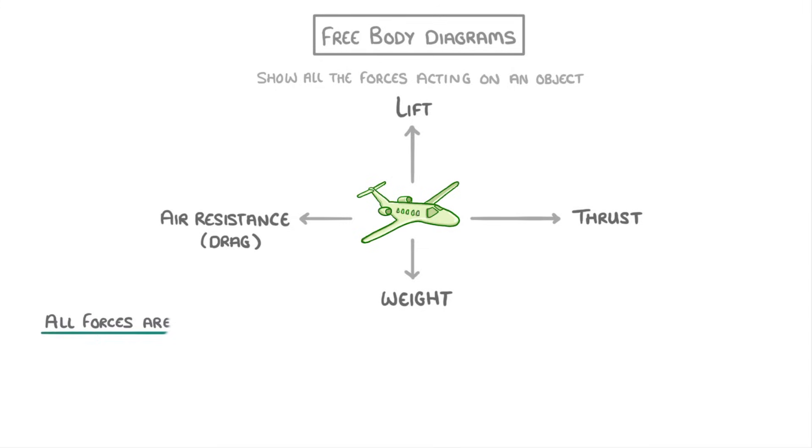Because all forces are vectors, each of these has to have both a magnitude and a direction. We can see the direction from which way the arrows are pointing, but the magnitude of the force comes from how long each of the arrows are. And to be more precise, we can label each of them in newtons.